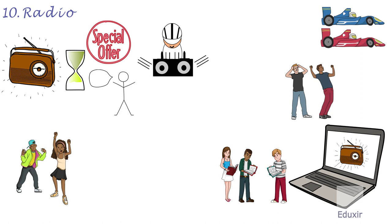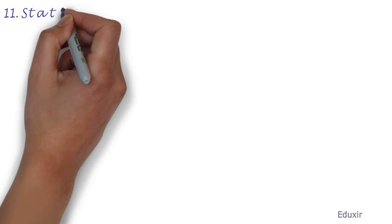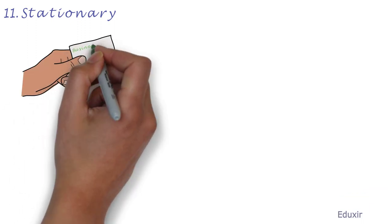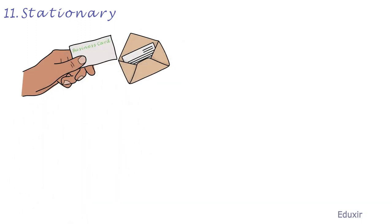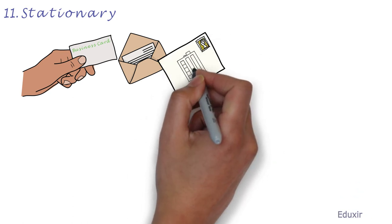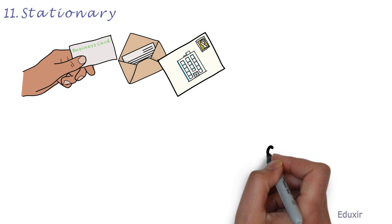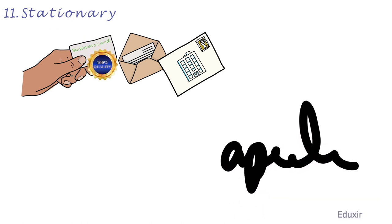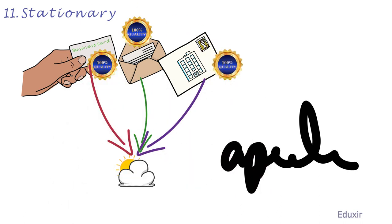The eleventh form of media option available is Stationery. Businesses print stationery like business cards, envelopes, letterheads, etc. to promote their business image or to spread the name of their business. The stationery used is of good quality and will provide everyday presentation of the business image.